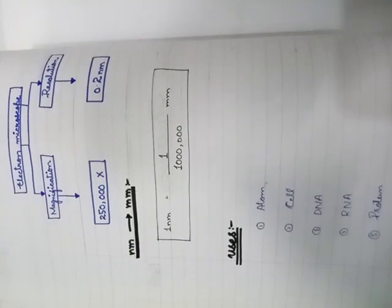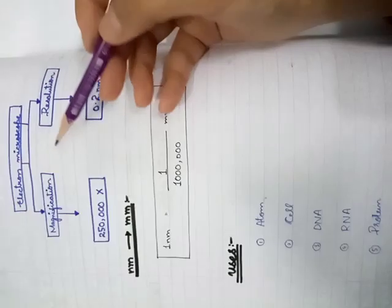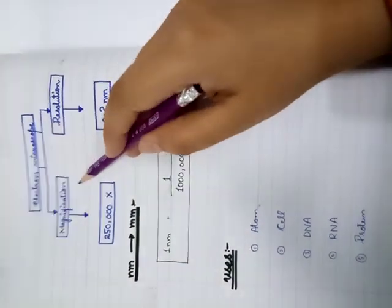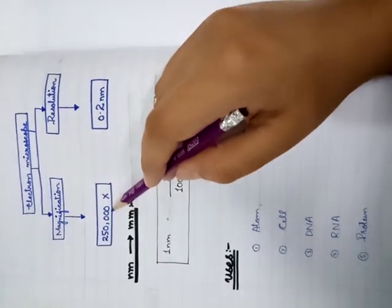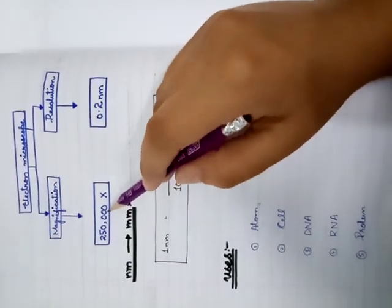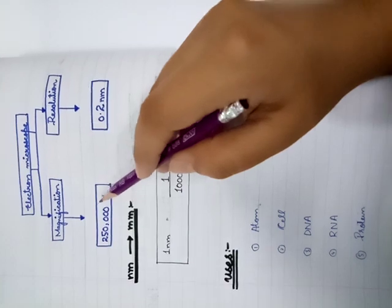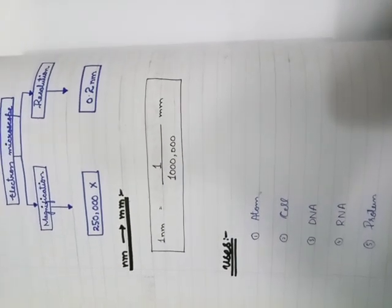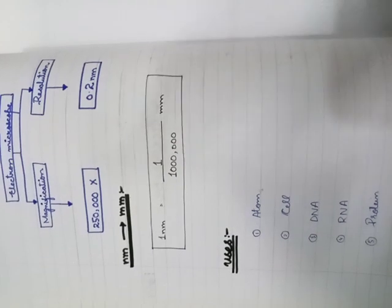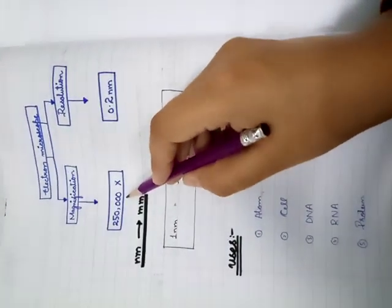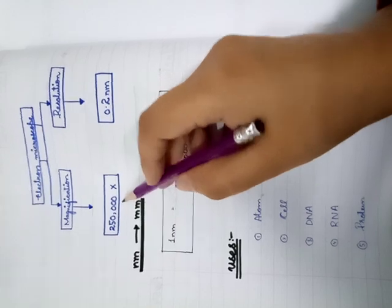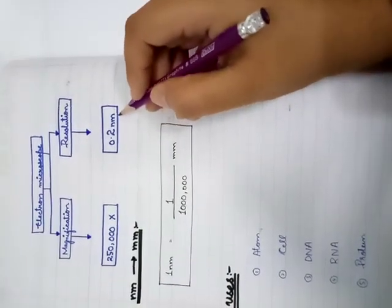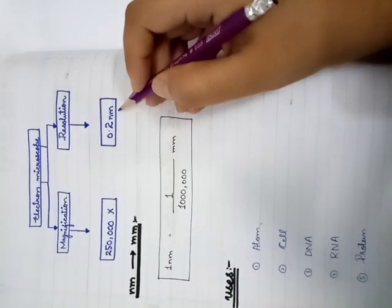Now come to the important terms of electron microscope. Some important terms like simple microscope's magnification. Magnification is 250,000 times. We have an electron microscope, for example simple microscope is 1,500x. This is a very much bigger image. Resolution is 0.2 nanometer. 0.2 nanometer is a resolution which is very minute.